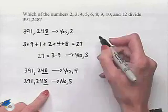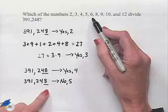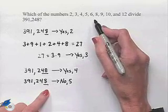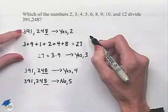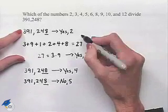What about 6? Well, 6 is equivalent to 2 times 3. So to determine whether or not a number is divisible by 6, we look back at what we found out in our first two steps. We know yes, it's divisible by 2.